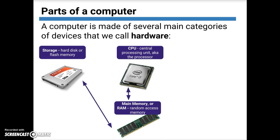When the computer wants to keep something for longer, it keeps it in what we call storage. That could be a hard disk, or what we call flash memory, or a solid state drive. That's for keeping things for a really long time — it doesn't go away the second I turn off the machine. It's stable, but it's not very fast.